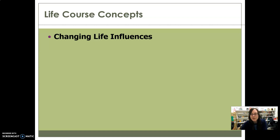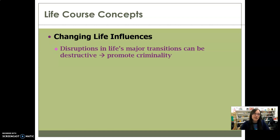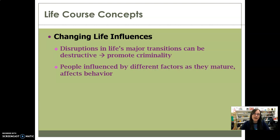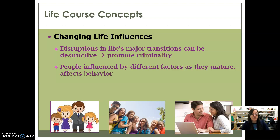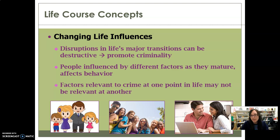So let's talk about life course concepts in general — this idea of changing life influences. If you have a disruption in a major transition point, that can be a majorly destructive factor and can promote criminality. People are also influenced by different factors as they mature. In childhood, your parents are by far the most important influence. Once you hit adolescence, it becomes all about peers. And then in adulthood, your career and marital factors are more important.